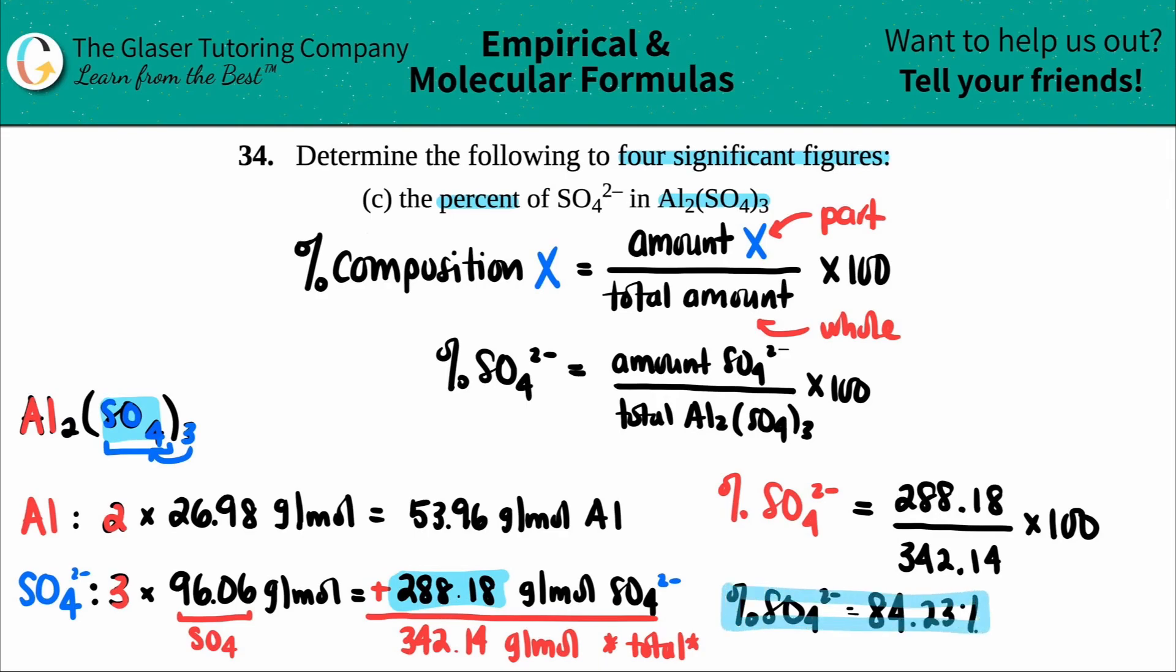So sulfate takes a huge chunk of the percentage of this compound. If we wanted to find the aluminum, you could take 100 minus 84.23, because that's the only thing remaining. But they just wanted the percent of sulfate, and that's it.